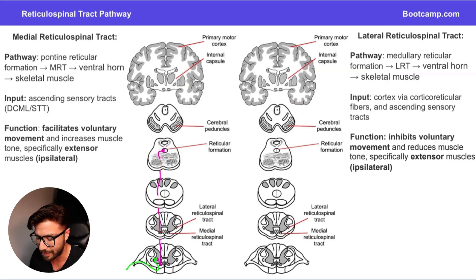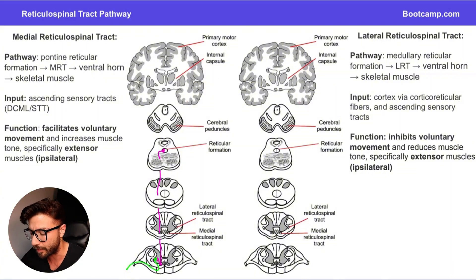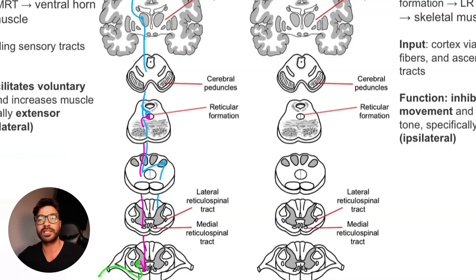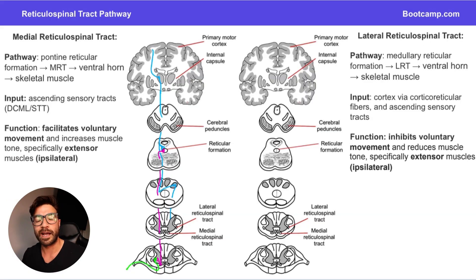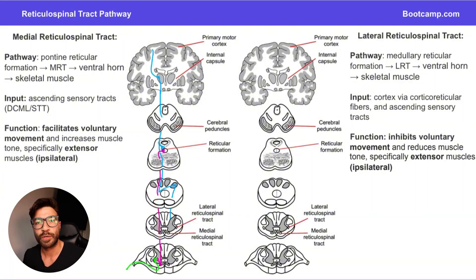So the medial reticulospinal tract begins at the reticular formation in the pons, descends down through that medial reticulospinal tract, enters the ventral horn, and that lower motor neuron then goes and stimulates the target muscles. This pathway also receives input from ascending sensory pathways — both the dorsal column medial lemniscal pathway and the spinothalamic — which provide fibers to stimulate the reticular formation and help modulate the output. The function of this pathway is to facilitate movement and increase muscle tone, specifically in the extensor muscles, on the ipsilateral side.